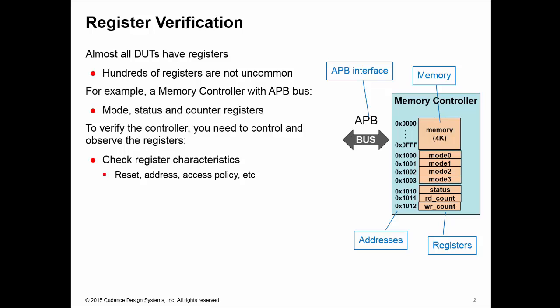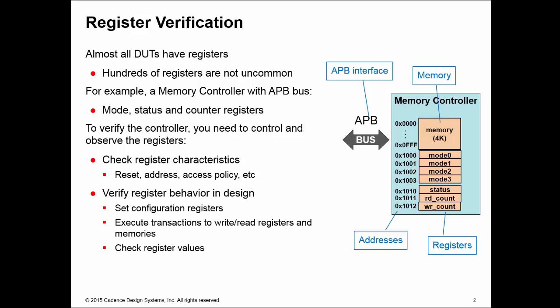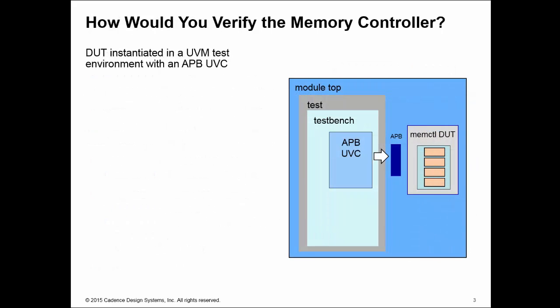We check they have the right reset value, the right address, the right access policies, and secondly to check their behavior as part of the design. This typically involves setting up some configuration registers, doing read and write accesses to the registers and memories of the controller, and finally checking the reset values to make sure they are what we expect. We also want to collect coverage - making sure we've written and read to every bit of our status register.